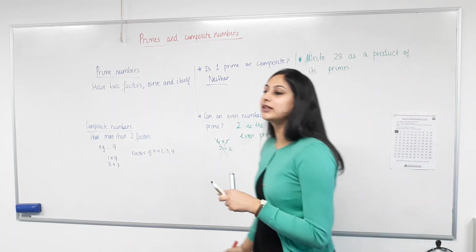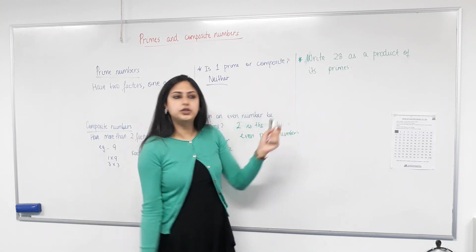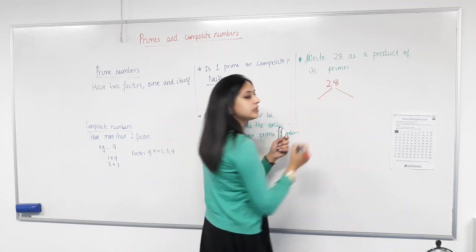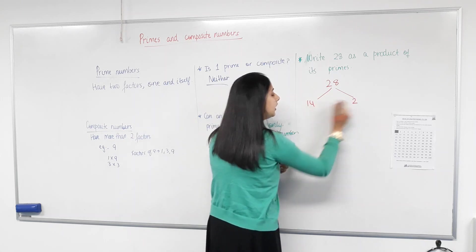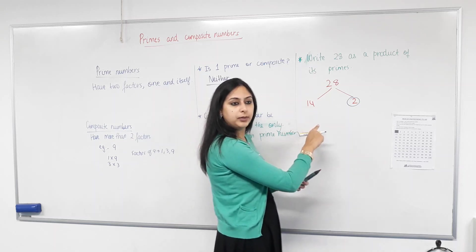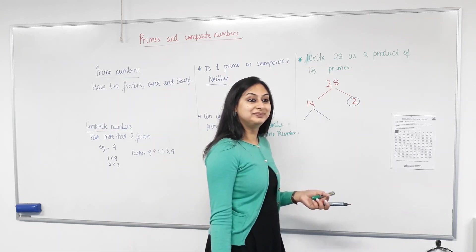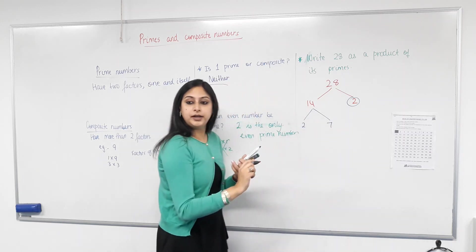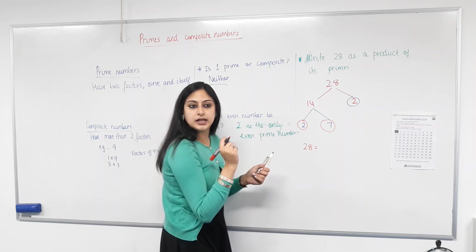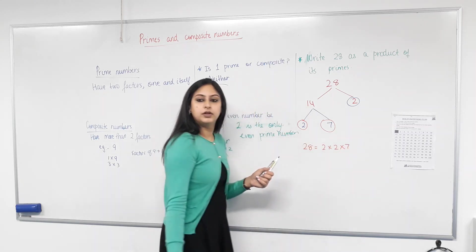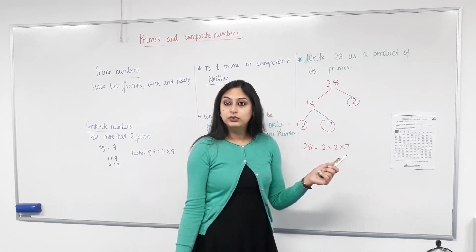Write 28 as a product of its primes. We have done this before. Just a quick revision. We do factor trees. Does that ring a bell? Yes. It should. So, 28. Two numbers that times together to give us 28. Fourteen and two. Are we happy with that? Yes. Now, any of these a prime number? Yes. Circling. Fourteen a prime number? No. We keep going. Two numbers multiplied to give me 14. And it's seven times two. Seven and two. Two a prime number? Yes. Seven a prime number? Yes. Can I circle them? Yes. Then, 28 can be written as a product of these numbers that I have circled. So, that is two times two times seven. So, I've written 28 as a product of its prime factors. Is 28 a prime number? No. It has more than two factors.